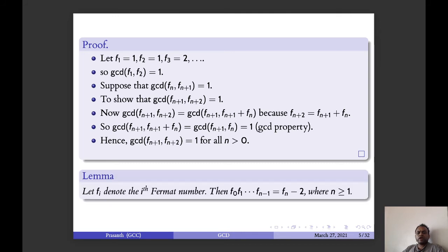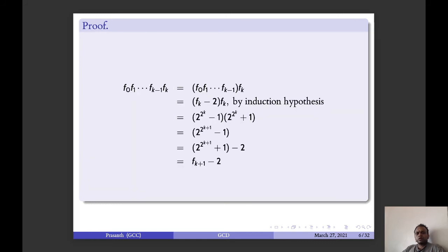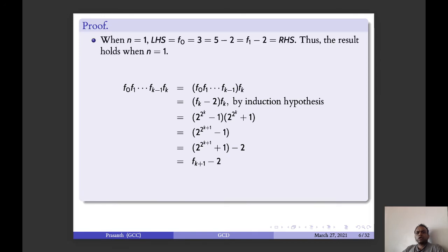Let F_i denote the i-th Fermat number. Then F_0 · F_1 · ... · F_{n-1} equals F_n minus 2, where n is greater than or equal to 1. For n equal to 1: LHS is F_0, which equals 3, and that equals 5 minus 2, which equals F_1 minus 2, which is the RHS. So the result holds for n equal to 1.